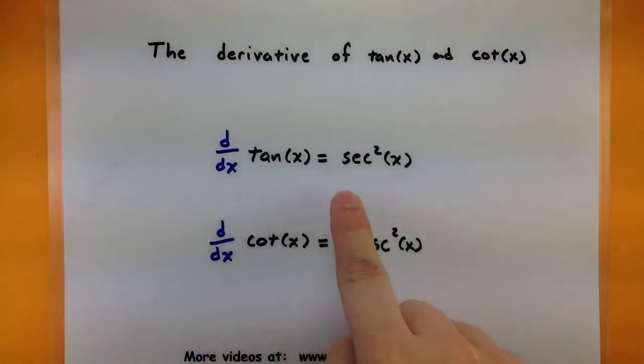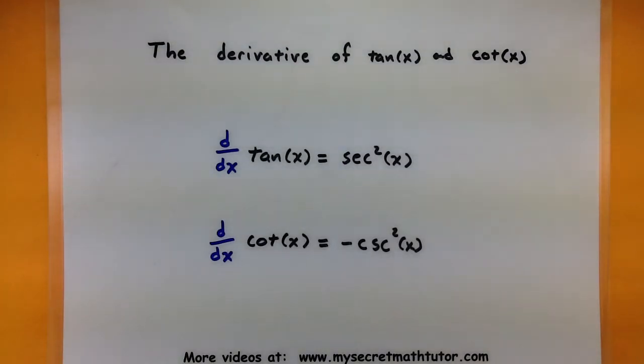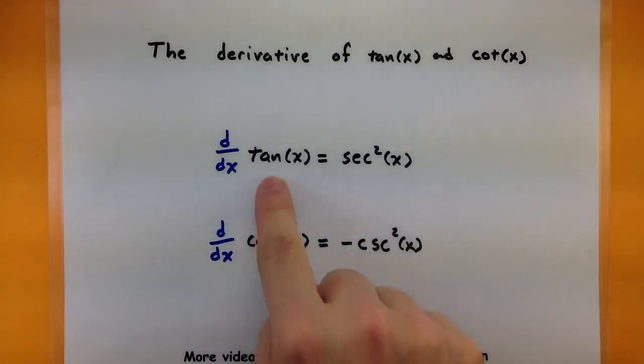The derivative of tangent is simply secant squared. And the derivative of cotangent is negative cosecant squared. So you'll notice that these are just a little bit more complicated than sine and cosine, but you can use them fairly easily anytime you want to take the derivative of one of these two functions.